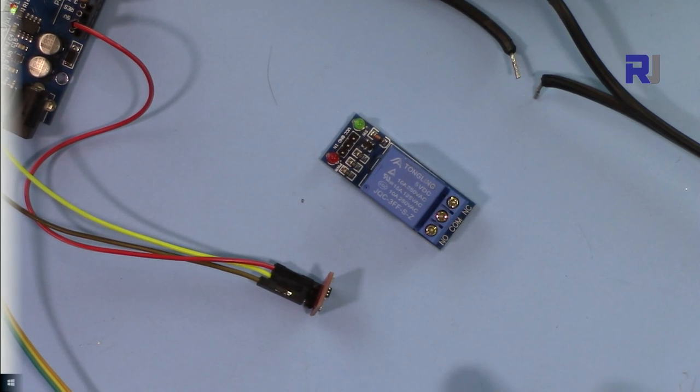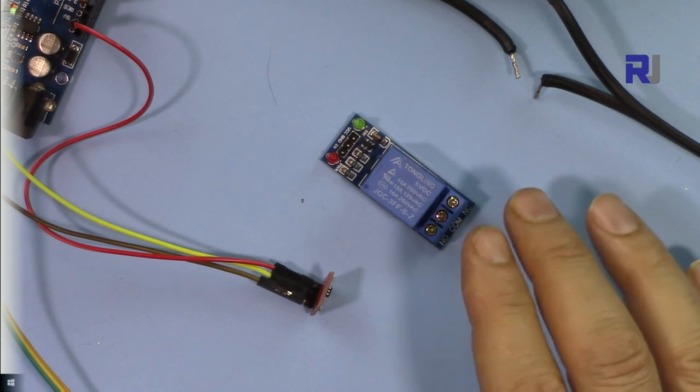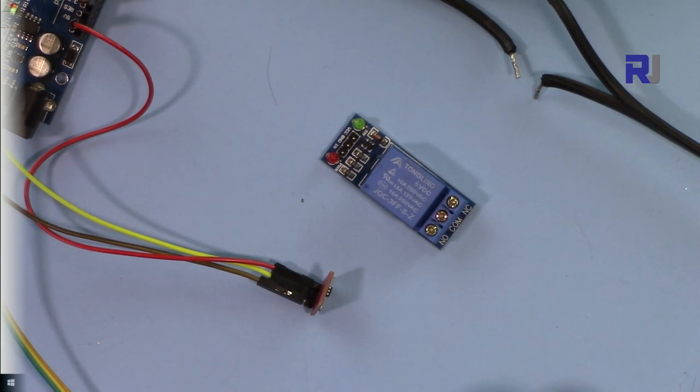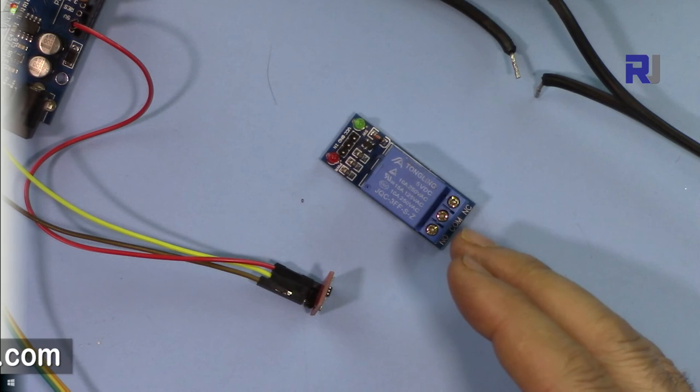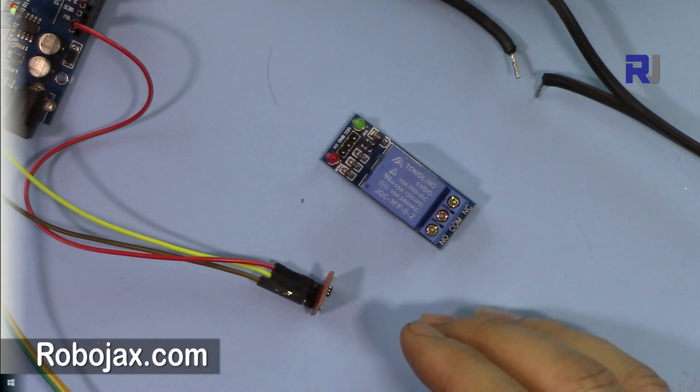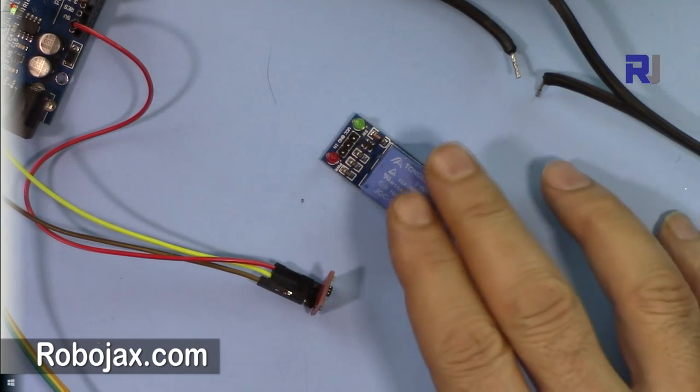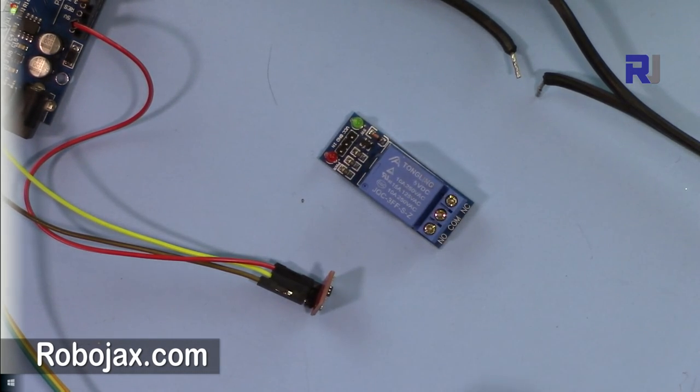Thank you for watching. This was how you can turn the light on with a touch and keep it on, and when you touch it again it goes off. This can be applied to other applications. You can just modify the code to make it work for something else. If you like the video please thumbs up and please share it. If you want to get updates of my videos please subscribe, I appreciate it.